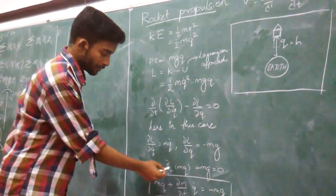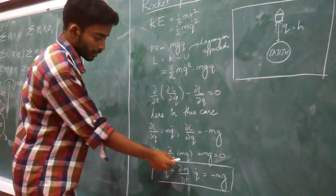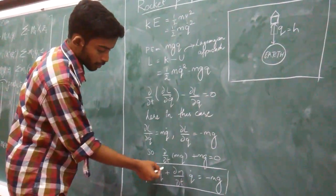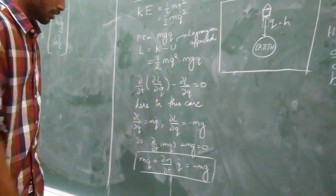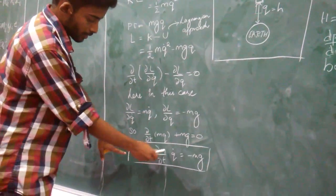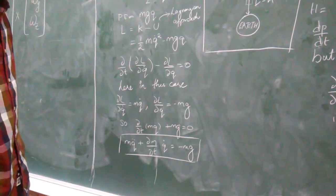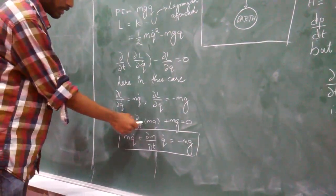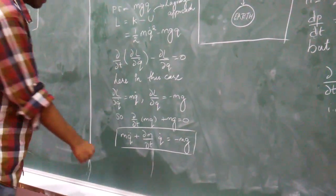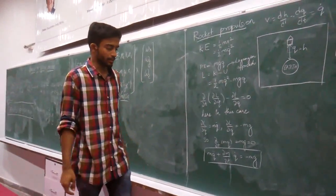The left-hand side d/dt(mq̇) can be written as m·q̈ + (dm/dt)·q̇, using the product rule of differentiation. Since m is not constant — m is also a variable with respect to time — we differentiate m as well. This is the equation of motion of a rocket derived using the Lagrangian.